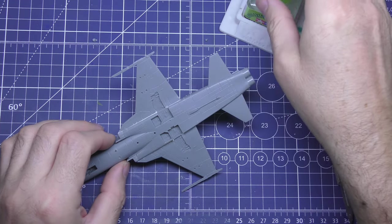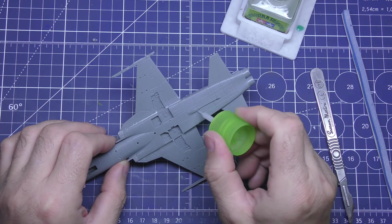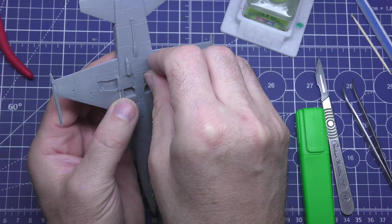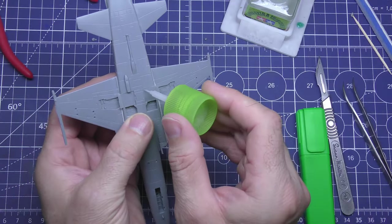Here's the arresting hook, or whatever it's called, just so that when it's landed on aircraft carriers it can catch.